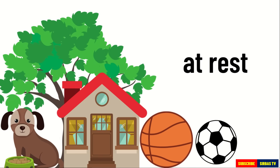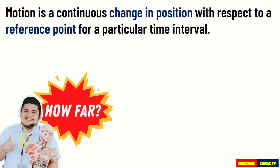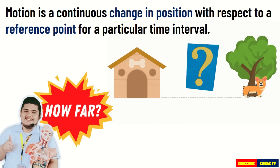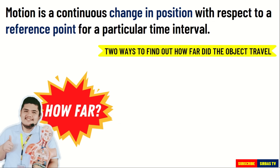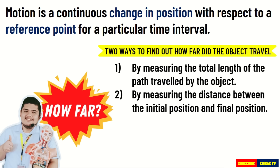You already know that motion is defined as the change in position for a particular time interval. Let us start describing motion by finding out how far did the object travel after it changed its position. There are two ways to find out how far did the object travel. First is by measuring the total length of the path traveled by the object, which is called the distance. And second, by measuring the distance between the initial position and final position of the object, which is called the displacement.